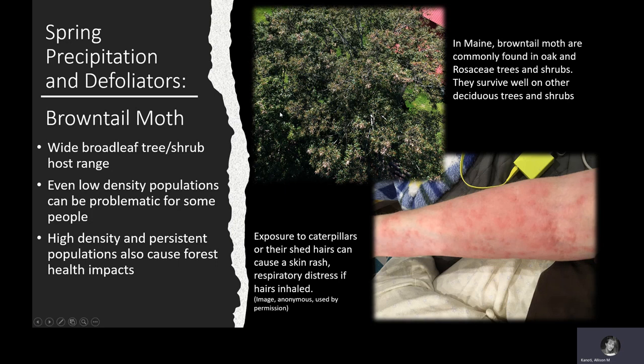The primary problem with brown tail moth is that even at low populations, it can cause human health and quality of life impacts. Encounters with a caterpillar's hairs can cause a painful, itchy rash in some people. When inhaled, the hairs can cause respiratory distress. Brown tail moth becomes a forest health issue when there are persistent high density populations or other stressors, and that can lead to both branch dieback and tree mortality.